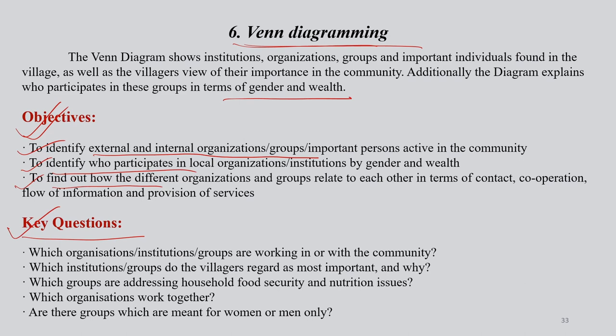The questions to ask participants for Venn diagramming include: first, which organizations, institutions, or groups are working in your community? Second, which institutions or groups do the villagers regard as the most important, and why? Third, which groups are addressing household food security and nutrition-related issues? You should also find out who is working together — some organizations will be working in isolation and some as a group — because this has implications for policy and development initiatives in that area.